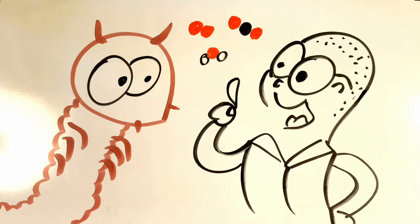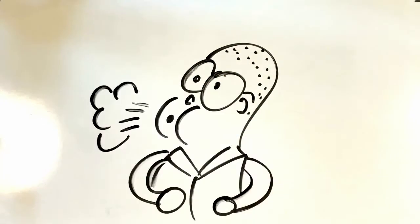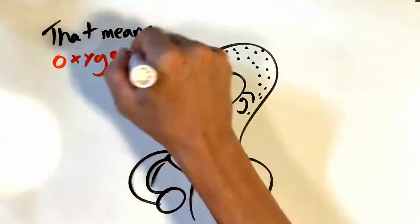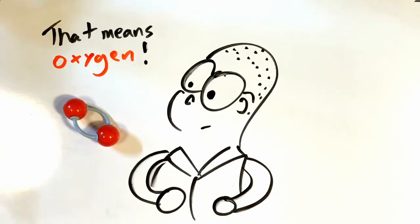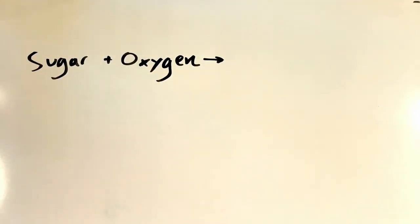What else do we already know about animals that might help us understand what's going on at the nanoscopic scale? You probably already know that animals have to breathe air to live, and that means oxygen. So maybe we can consider oxygen one of our inputs. So when you think about it, we already have both of our inputs, or reactants, sugar and oxygen.